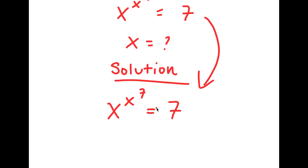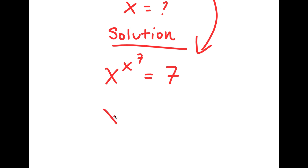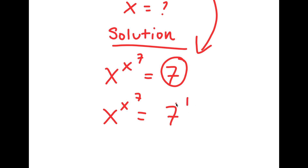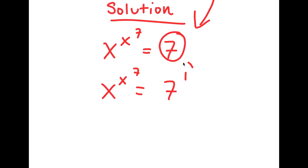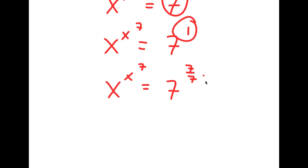Now, 7 here is the same thing as 7 to the power of 1. And I can rewrite 1 as 7 over 7, because any number over itself is equal to 1.